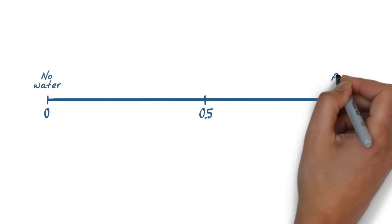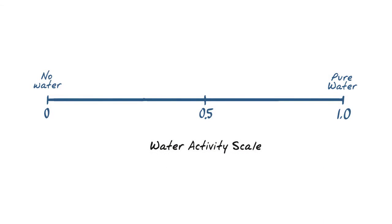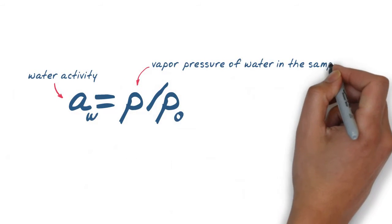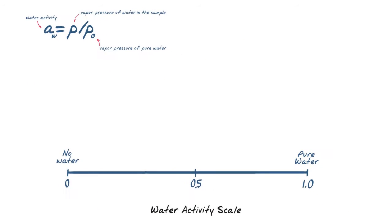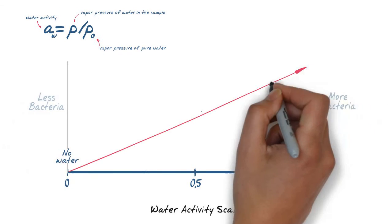Water activity is based on a scale of 0 to 1.0, with pure water having a value of 1.00. It is defined as the vapor pressure of water over a sample divided by the vapor pressure of pure water at the same temperature. In other words, the more unbound water we have, the more likelihood we have of microbial spoilage.